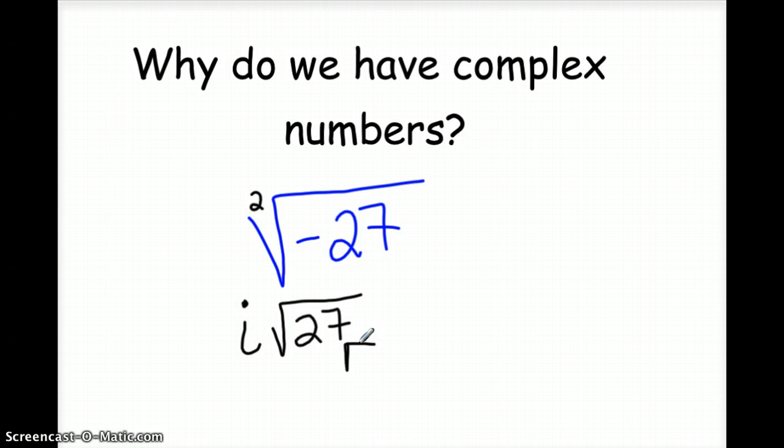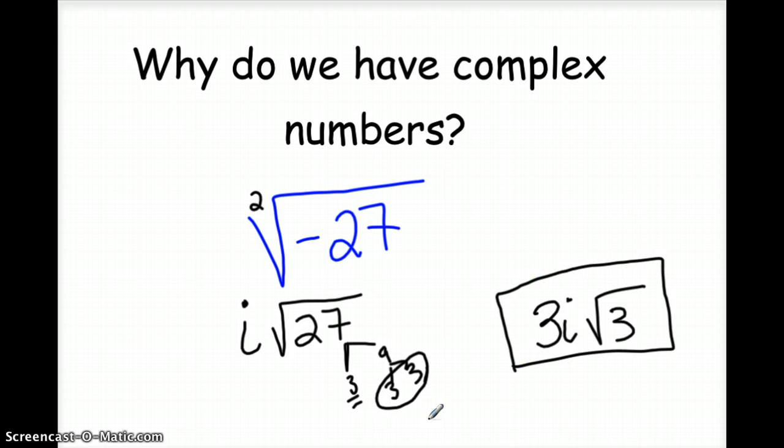So then we would just do our normal factor tree of, you know, like 3 and 9, 3 and 3. And we know we need pairs. So because we have a set of 3s, a 3 would come out with the i, and inside would stay a 3. So in the blue with the negative, your hands are kind of tied, you can't do anything. But these mathematicians back in the old days said, let's get rid of the negative by putting the i out. So then that way we can actually do something with this problem. So that's why we have complex numbers.